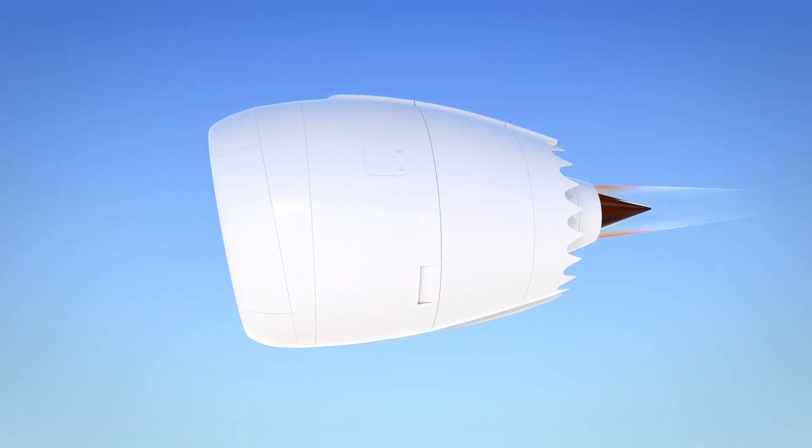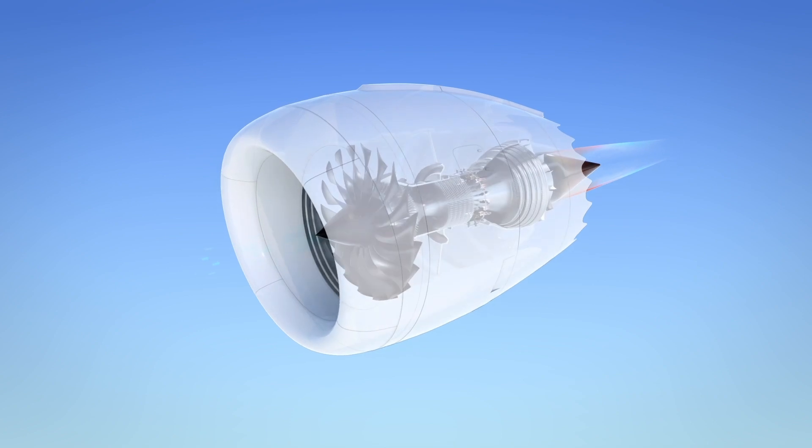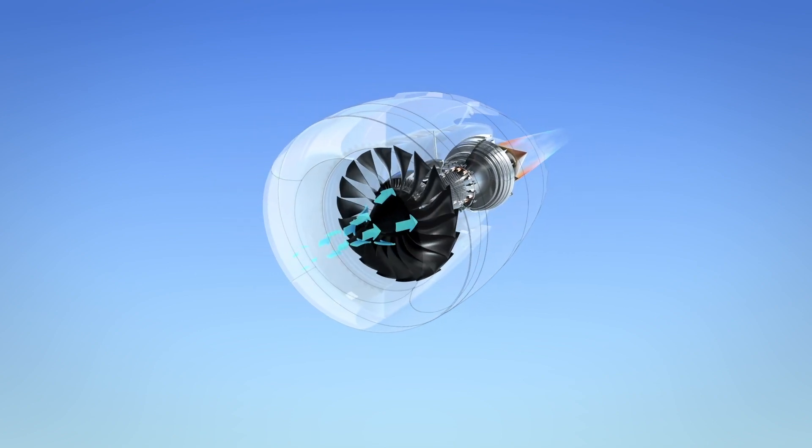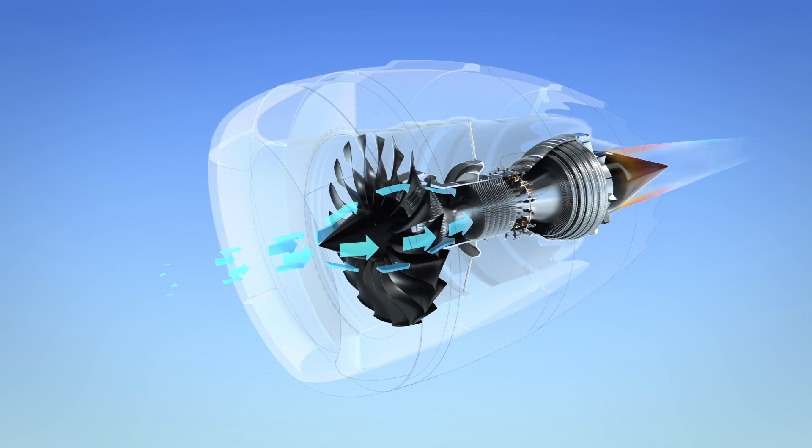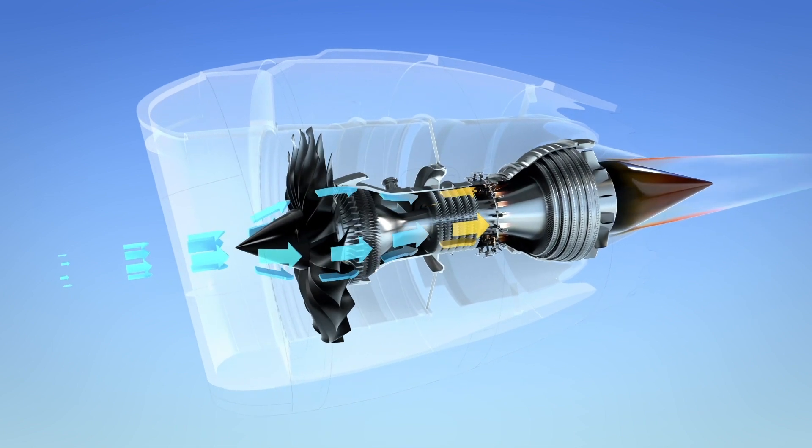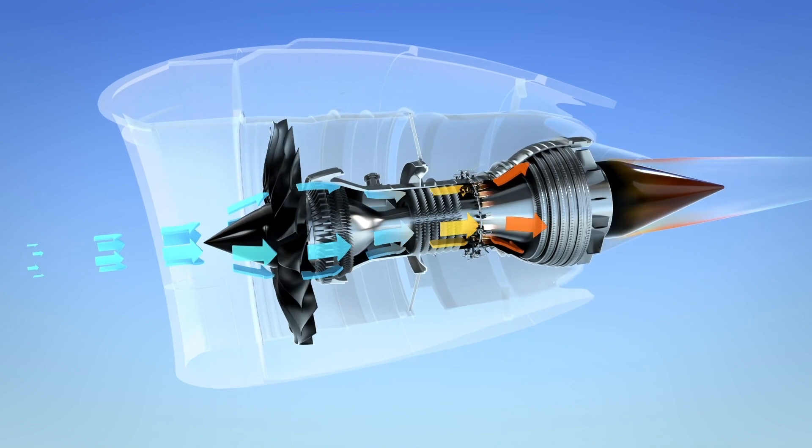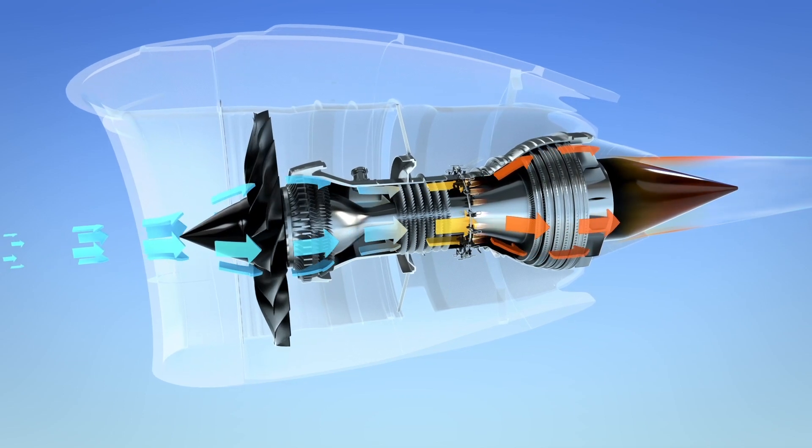Air enters the jet engine and moves through the compressor, where the pressure increases to over 30 bar. As the high-pressure air moves into the combustion chamber, it's mixed with fuel which ignites and burns with the air to exhaust gases of 1300 degrees Celsius.